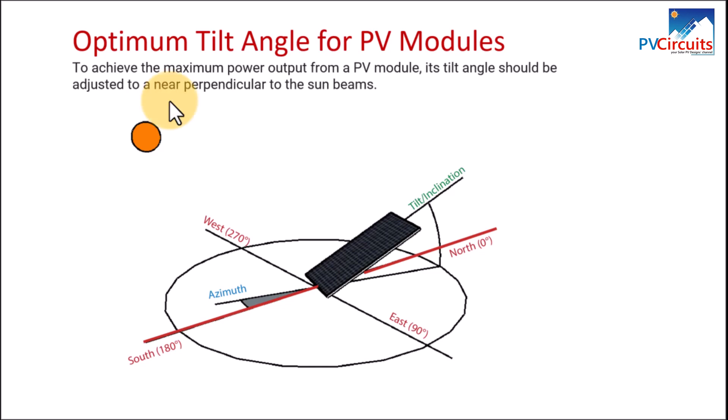To achieve the maximum power output from a PV module, its tilt angle should be adjusted to a near perpendicular to the sunbeams. We do that by adjusting the module's inclination angle and the azimuth so that the module is almost perpendicular to the sunbeams.